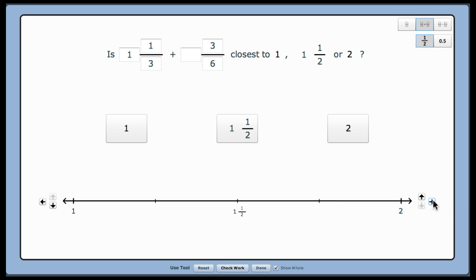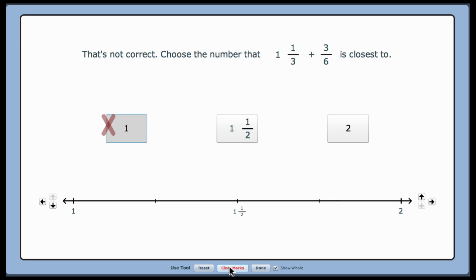Selecting an incorrect estimate, say 1, then clicking on the Check Work button presents feedback with a restatement of the problem.